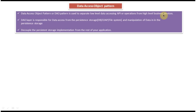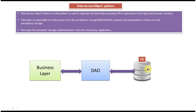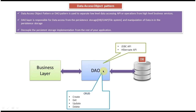You will see one diagram so that you will understand this clearly. On the right side you can see the DB, and on the left side the business layer. The business layer is responsible for doing some business operations or functionality. In between the database and business layer there is another layer called the DAO layer.